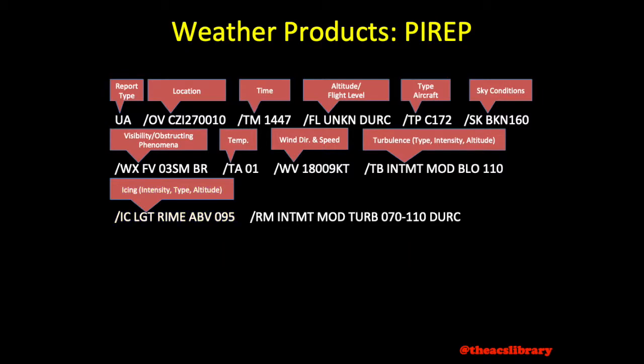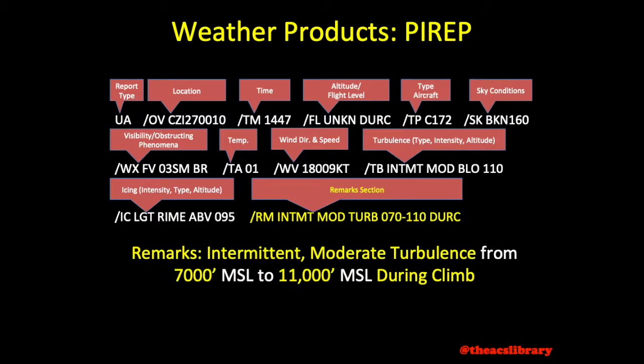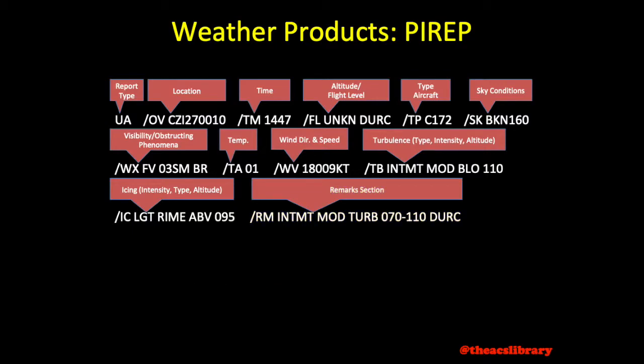This comprises the main body of a PIREP. Following would be a remarks section providing a greater description of the weather phenomena encountered. In this case, a more explicative description of the turbulence encountered is provided — intermittent moderate turbulence was encountered from 7,000 feet to 11,000 feet MSL during climb-out. There is an insane amount of possible remarks that can be included, and if the coded language is not sufficient to describe the conditions encountered, plain language will be used instead.